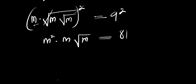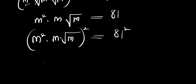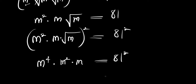The next thing we are going to do again is to take another square. So we have m squared times m times root of m, all to the power 2, and this equals 81 to the power 2. By doing that we are going to have m to the power 4, times m to the power 2, times m, and this equals 81 to the power 2.